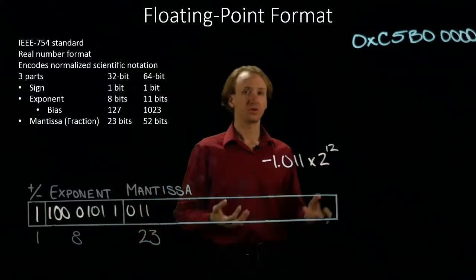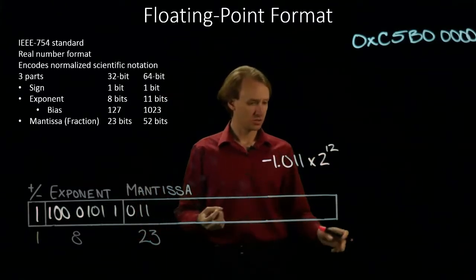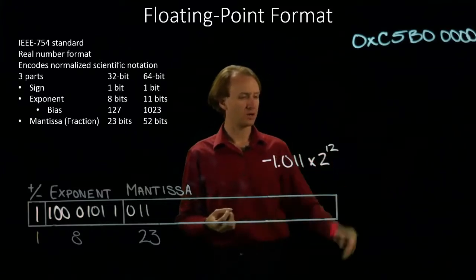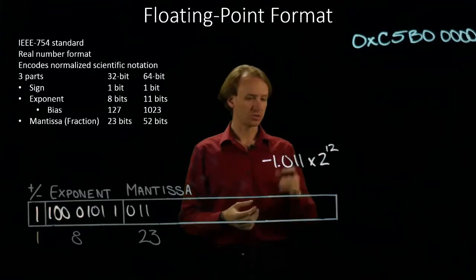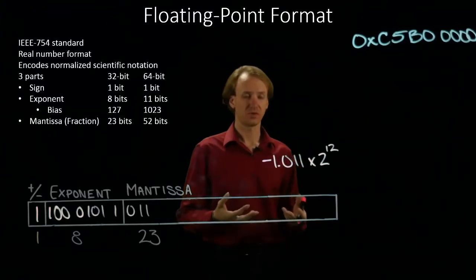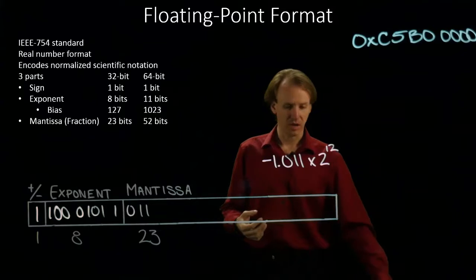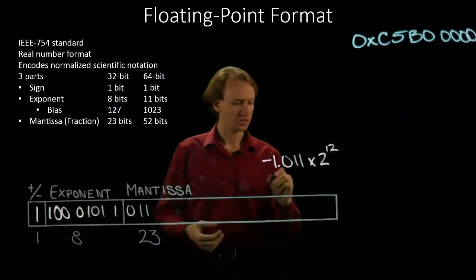Now I need to convert this back into decimal. I could move my binary point twelve places to the right and figure out the value of those three bits, add them up, or I can try something else.